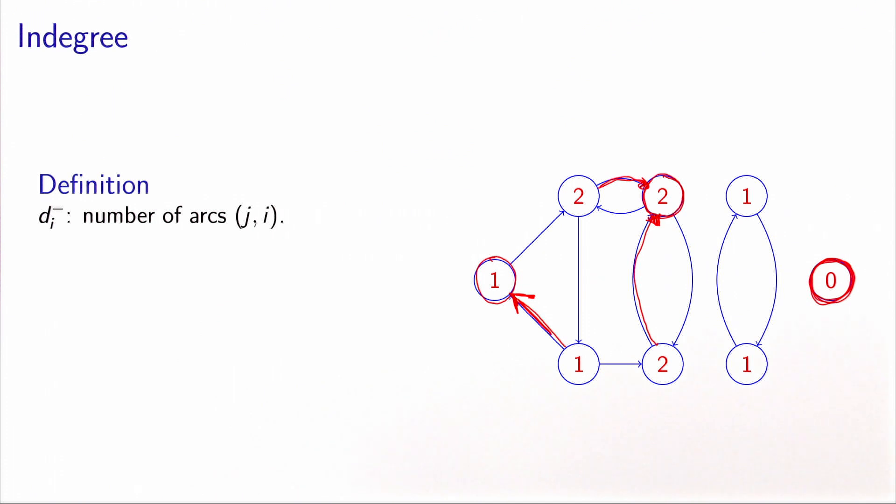You can verify that the other nodes have the in-degree reported in the circle. We denote the in-degree of node i as d_i^-. This is the number of arcs (j,i) arriving at i.